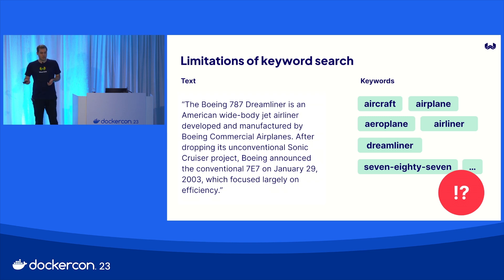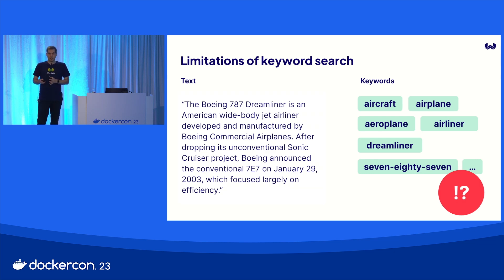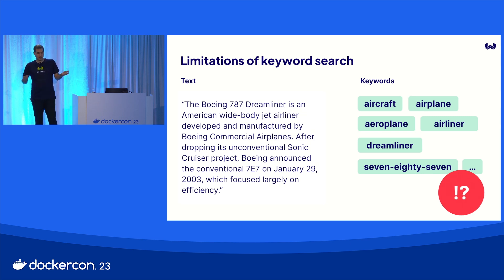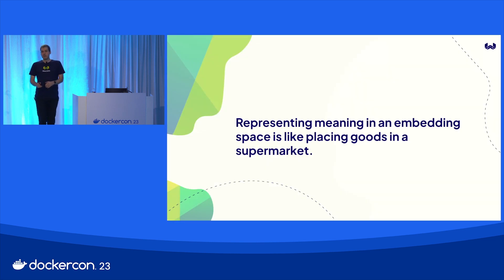With traditional search engines, you would have to do all kinds of workarounds — for example, tell the search engine that if you encounter the word 'aircraft,' that really is the same as if you encounter the word 'airplane' or 'airliner.' And then it gets even harder with things that aren't exact matches: dreamliner is one specific type of airplane, but you can sort of replace that with the word airplane. This is super difficult with traditional keyword search, and it becomes even harder if you have negation — for example, 'not an airplane.' The idea behind using vector embeddings is to index the meaning rather than the lexical match for these words.